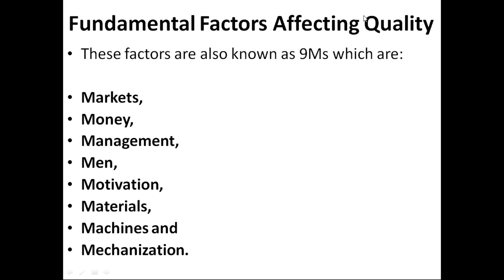Next is machines. If we are using high-standard machines — maybe fully automated, technically upgraded, the latest and most recent — then we can achieve a higher level of quality because chances of error will be minimized. But if we are using obsolete, depreciated machines, chances of errors will be more, which will lead to poor quality of the product.